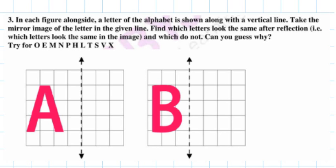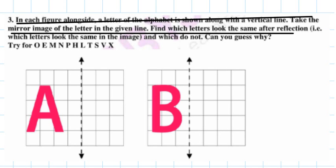This question says: in each figure alongside, a letter of the alphabet is shown along with a vertical line. Take the mirror image of the letter in the given line. Find which letters look the same after reflection - that is, which letters look the same in the image and which do not. Can you guess why?